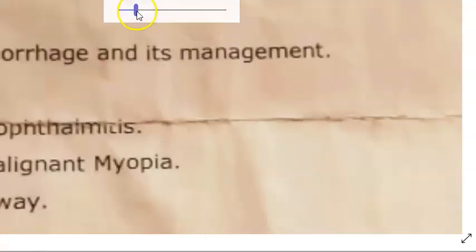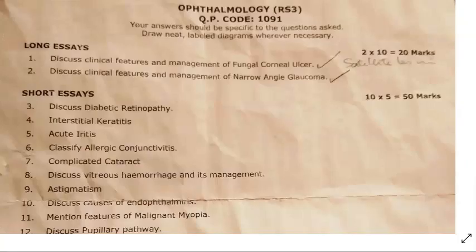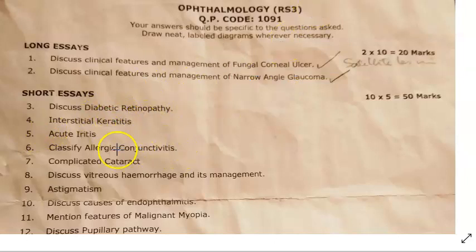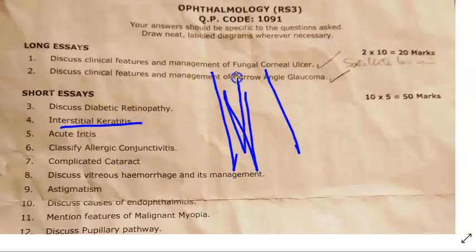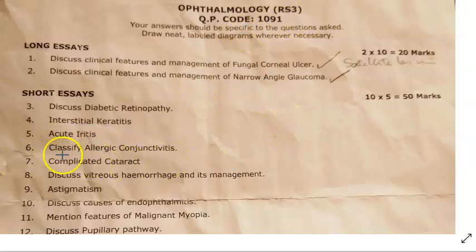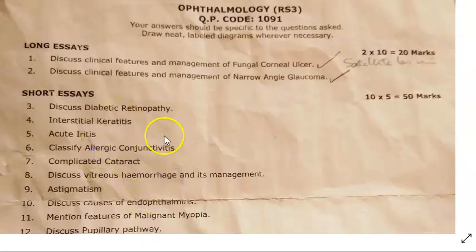Moving to the second question paper. Long answers asked: corneal ulcer with satellite lesions, narrow angle glaucoma (very important), diabetic retinopathy (write exudates and cotton wool spots), and interstitial keratitis where only the stroma of the cornea is involved, caused by tuberculosis, etc.